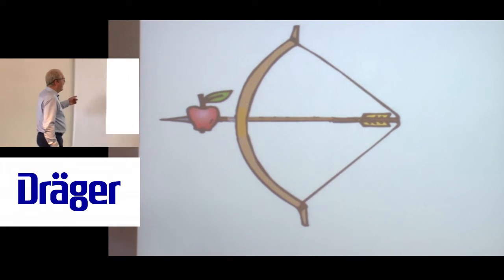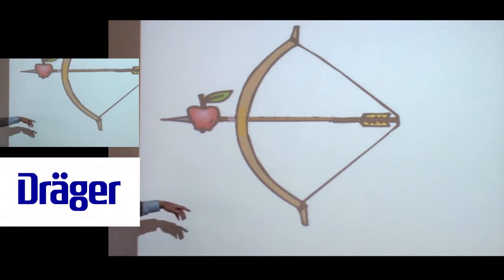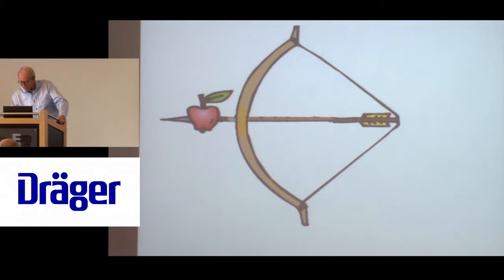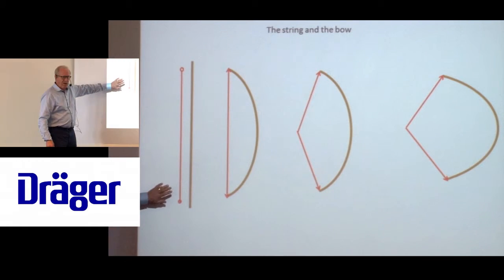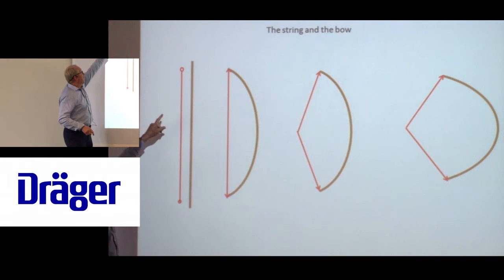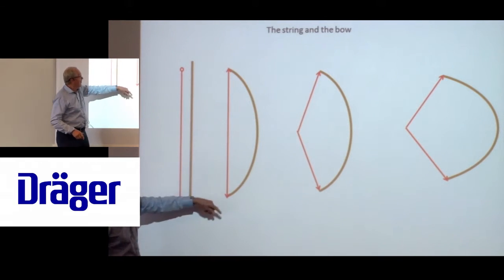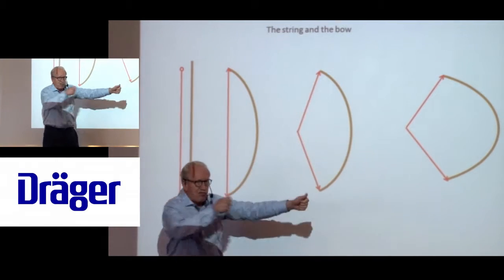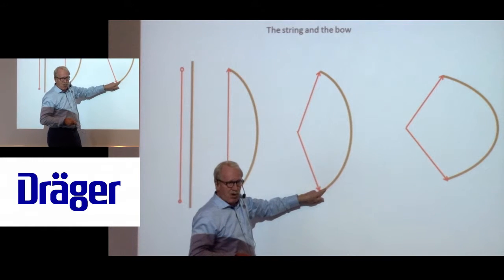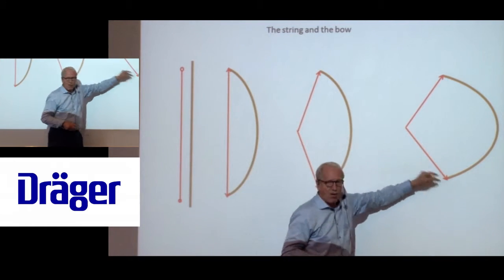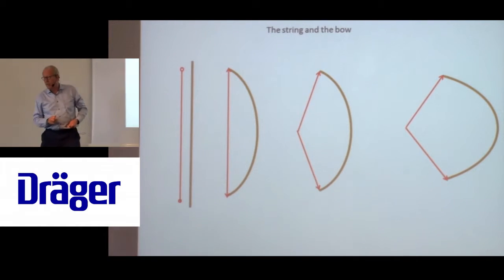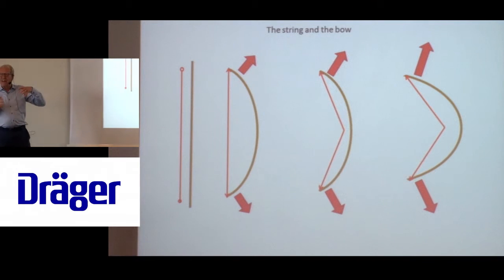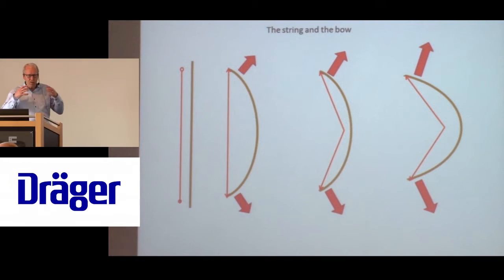Now let's speak about a bow and arrow analogy. A string is not elastic - you put it on the ends of the bow and bend it, so the bow wants to stretch the string. If you pull the string in, the more you pull, the more the bow will want to go out. And if you go the other direction, the same thing happens. This is the analogy of what is happening with the ribcage and the diaphragm.